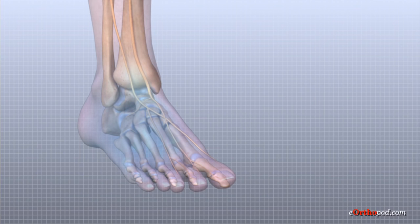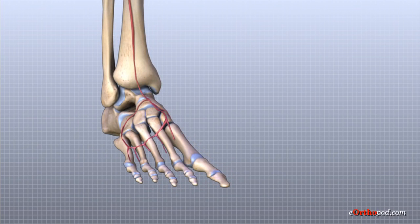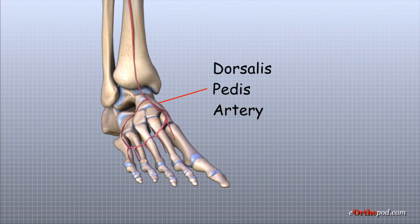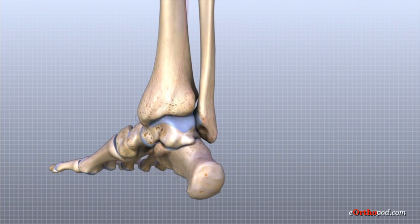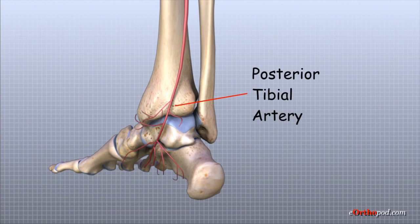The ankle gets blood supply from nearby arteries that pass by the ankle on their way to the foot. The dorsalis pedis artery runs in front of the ankle to the top of the foot; you can feel the pulse where this artery runs in the middle of the top of the foot. Another large artery, the posterior tibial artery, runs behind the medial malleolus and sends smaller blood vessels to the inside edge of the ankle joint. You can feel the pulse where this artery runs behind the medial malleolus.